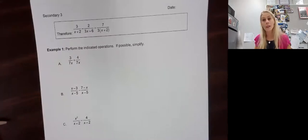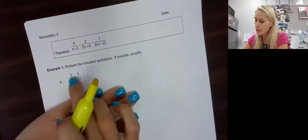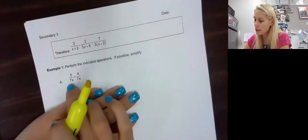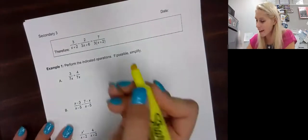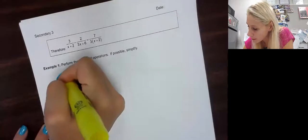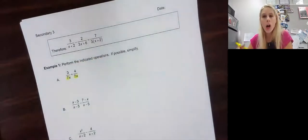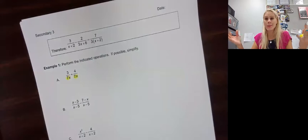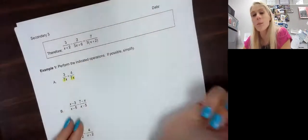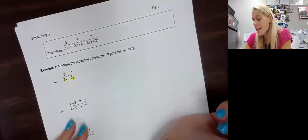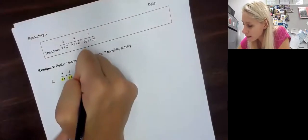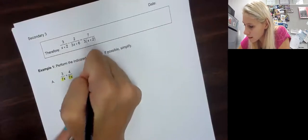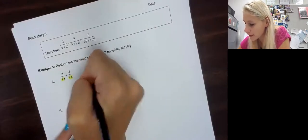Example A: first thing we need is to factor anything to make a common denominator. We have 3, 4, 7x, and 7x — nothing to factor. I'm going to highlight what they have in common in the denominator. They already have a common denominator of 7x, which means we can go straight to performing the operation — addition. So 3 plus 4 is 7, all over 7x.